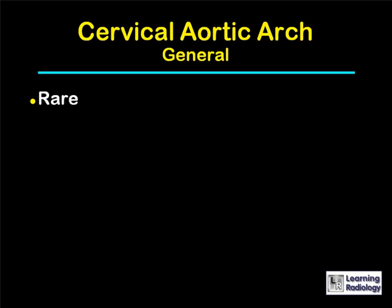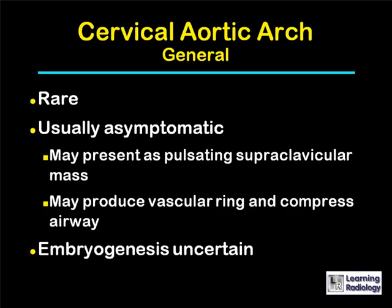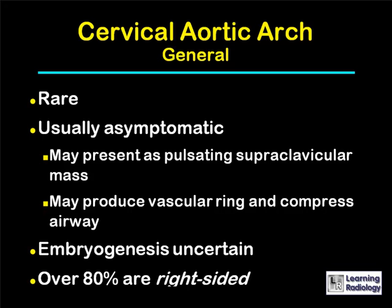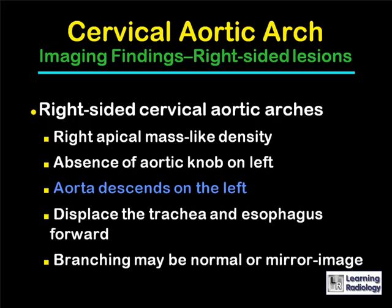Cervical aortic arches. In general, they are quite rare and usually asymptomatic. They can present as a pulsating supraclavicular mass, or they can produce a vascular ring and compress the airway. Their embryogenesis is uncertain. Most cervical aortic arches are right-sided. Right-sided cervical aortic arches produce an apical mass, with absence of the aortic knob on the left. The aorta descends on the left, and there is displacement of the trachea and esophagus forward.